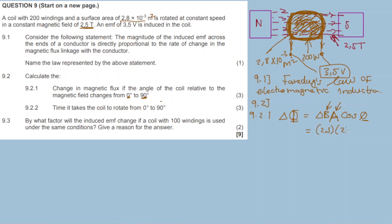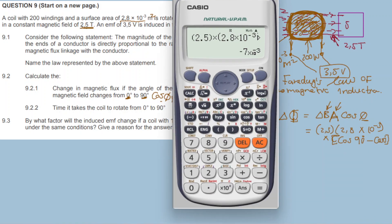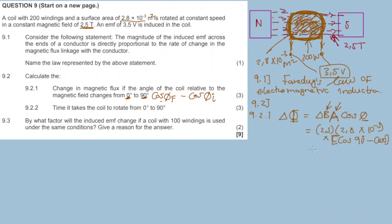So we have 2.5 times 2.8 times 10 to the exponent minus 3, times the bracket cos 90 degrees minus cos 0 degrees. It's cos theta final minus cos theta initial, since this is a change from 0 to 90 degrees. That equals negative 7 times 10 to the exponent minus 3 webers.